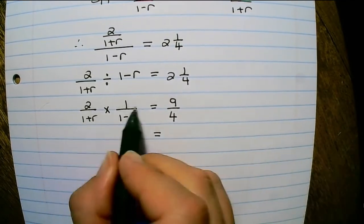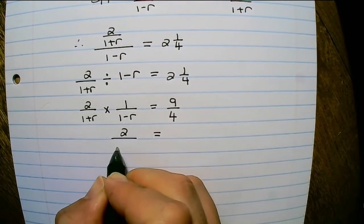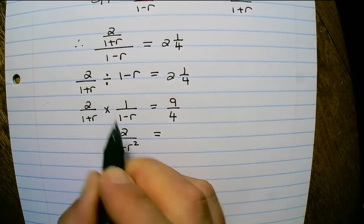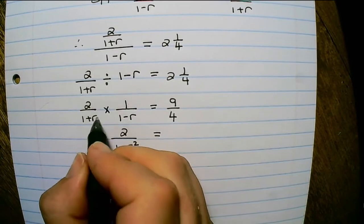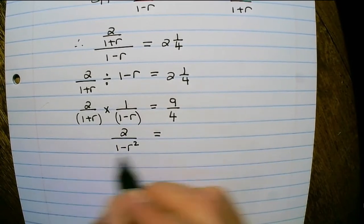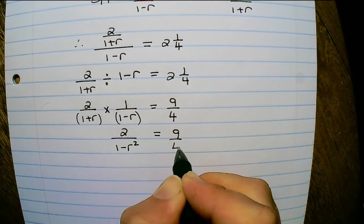Now if I multiply out, I have 2 over 1 minus r squared, because I multiply the numerators and I multiply out the denominators. And that equals 9 over 4.